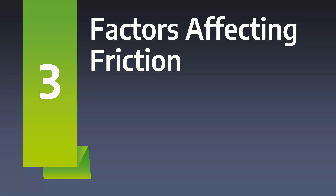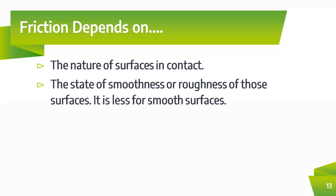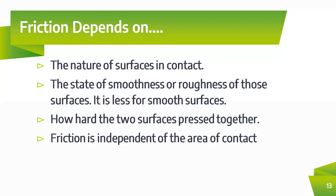Friction is an opposing force, and it depends on several factors. First, it depends on the nature of the surfaces in contact. Second, it depends on the state of smoothness or roughness of the surface — a smoother surface will produce less friction compared to a rough surface. Third, it depends on how hard the two surfaces press together; if the surfaces press harder against each other, friction will also be more. And importantly, friction does not depend on the area of contact.